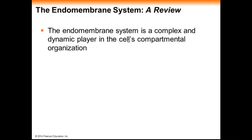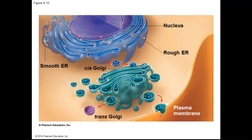The endomembrane system is a complex dynamic structure that compartmentalizes some of the functions inside the cell. Remember that the ER is continuous with the nuclear envelope. In the rough ER, proteins are produced that are packaged into vesicles and sent to the Golgi. The Golgi processes those proteins and then may either package them into lysosomes or into transport vesicles that end up at the plasma membrane for secretion.